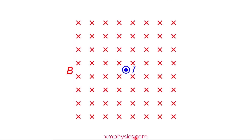Let's try one last one. This rod will experience no magnetic force because the magnetic field is into the screen and the current is coming out of the screen — they are parallel to each other. When they are parallel, there's no magnetic force. All right, that's all!